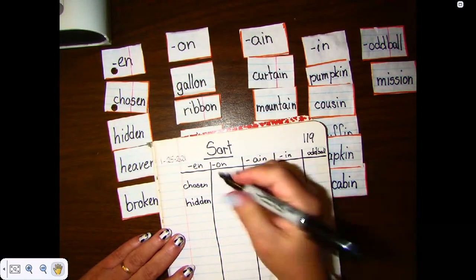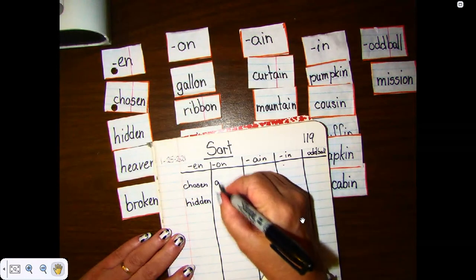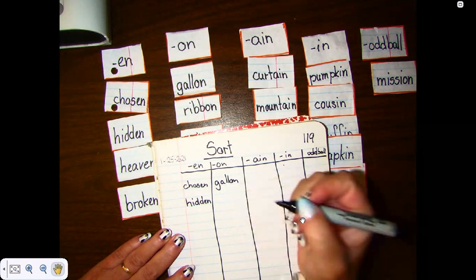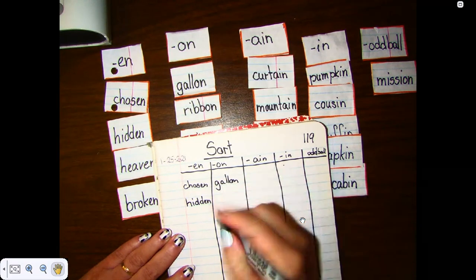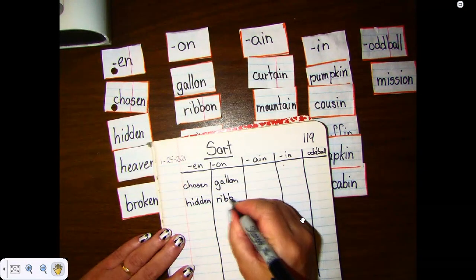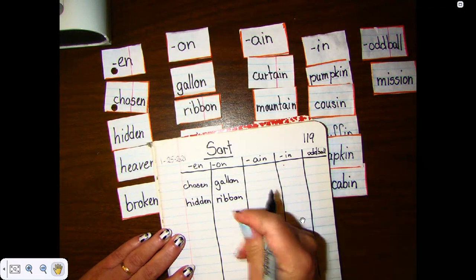All right. Now we're going to move on to our O-N column. So I have gallon. And I'm going to skip a line. And I'm going to write ribbon. Go ahead and pause right here and write the other two words down.